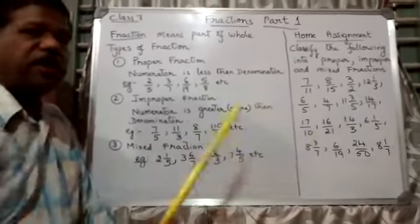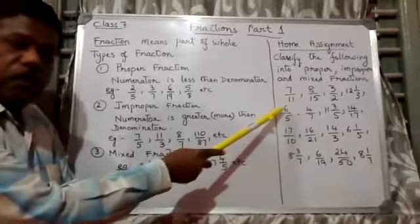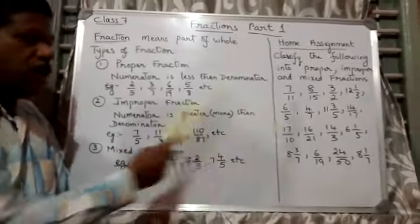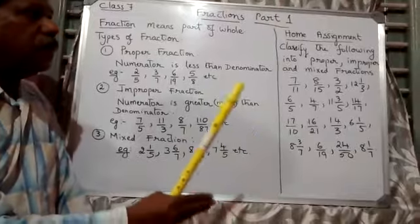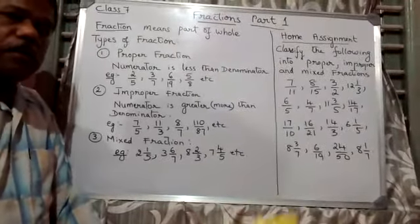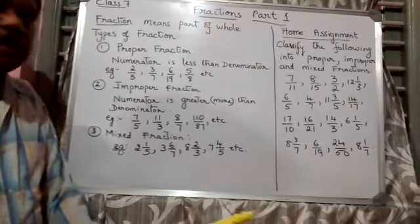Now, your home assignment is to classify these given numbers. 16 numbers are given. These 16 numbers are to be classified as Proper, Improper, and Mixed Fractions. I will read them out to you.